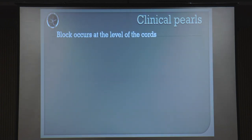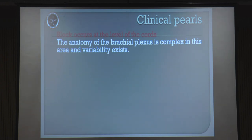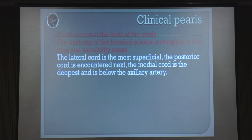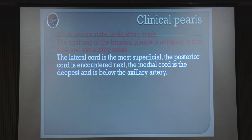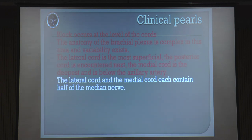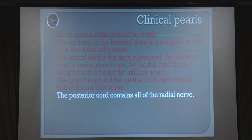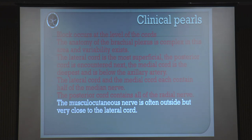The clinical fact: blocks occur at the cord level. Anatomy is quite variable, so you might have a tough time getting a block. The lateral cord is the most superficial, as you saw yesterday. Next is usually the posterior cord. The usual response which most people get when doing PNS is a lateral cord response, followed by a posterior cord. Going slightly more deeper, the medial nerve is formed by both medial and lateral cords. The radial nerve is from the posterior cord. The musculocutaneous nerve is almost outside at this level, so if you are getting a musculocutaneous response, it's not an ideal response - you have to search for the posterior cord response.